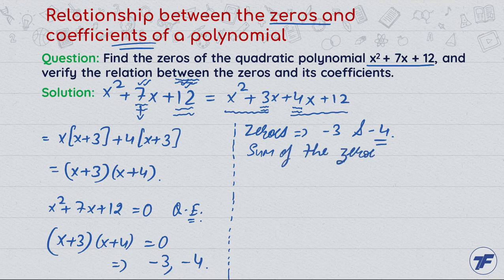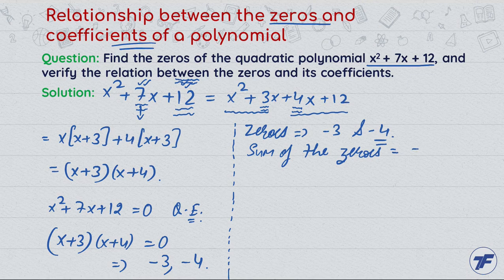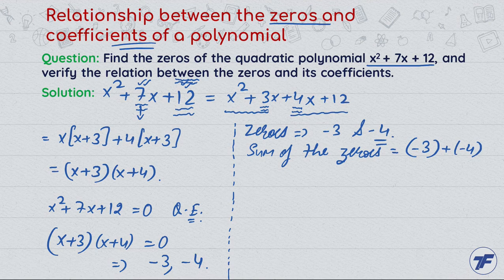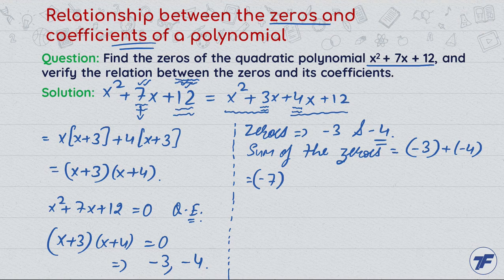Sum of the zeros: (-3) + (-4) = -3 - 4. In total, the value is -7. It is correct. Now look at sum of the zeros, sum of the roots is -b/a.